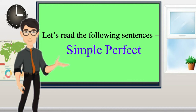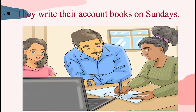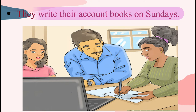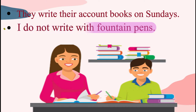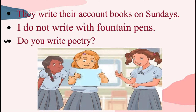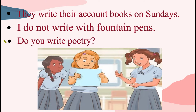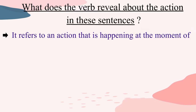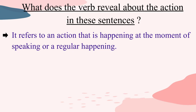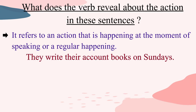Now, let us read the following sentences. They write their account books on Sundays. I do not write with fountain pens. Do you write poetry? What do you notice in these sentences? Number one, all the sentences refer either to an action that is happening at the moment of speaking, or something is being said about a regular happening. For example, the sentence 'they write their account book on Sundays' is a regular happening.